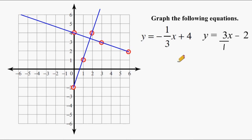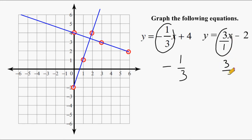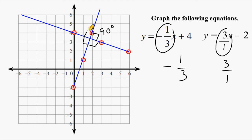I want to point out something here that's rather significant. If we look at the slope in this equation — negative one-third — and we compare it to the slope in this equation — positive 3 over 1 — we should notice that these are reciprocals of each other and one is negative and one is positive. Whenever you have two different equations where one is negative and one is positive and they are reciprocals of each other, the two lines will be perpendicular to each other, which means we have a right angle — a 90 degree angle formed here. So anytime you have two equations where the slopes are reciprocals of each other and one is negative and one is positive, they will form lines that are perpendicular to each other. That is something we could have noticed before we even graphed these equations.